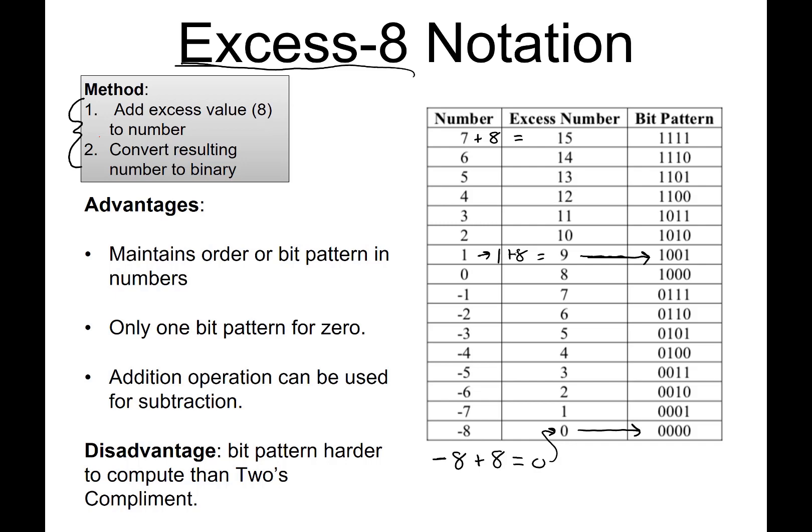The advantages of this is it maintains the bit pattern order in the numbers, so we can eyeball numbers and easily tell which ones are larger or smaller. Also, we only get one bit pattern for 0, so we're not wasting a bit on 0. We don't have another bit pattern representing 0.